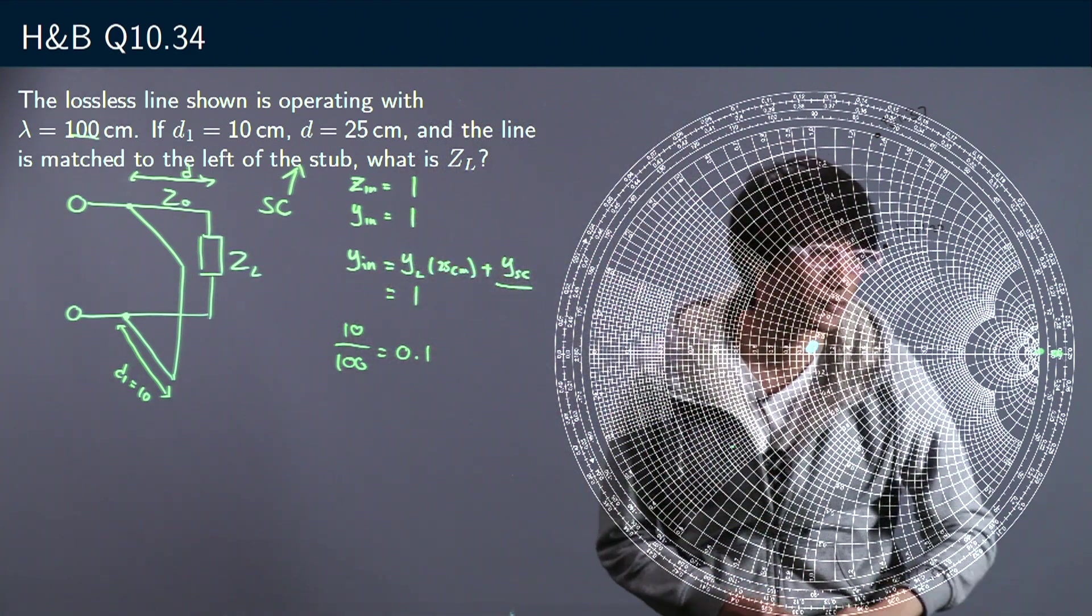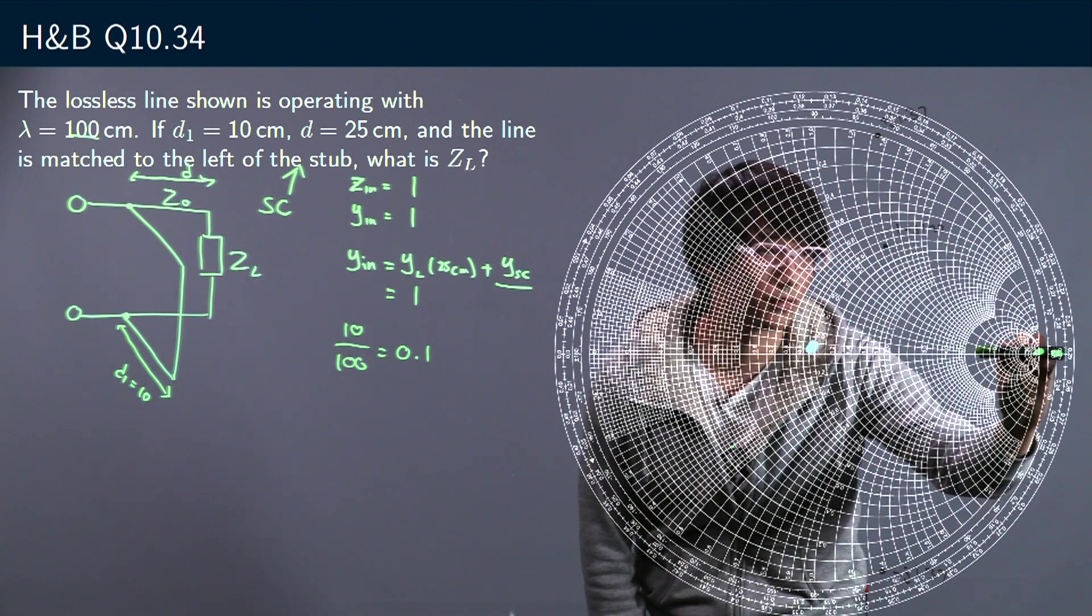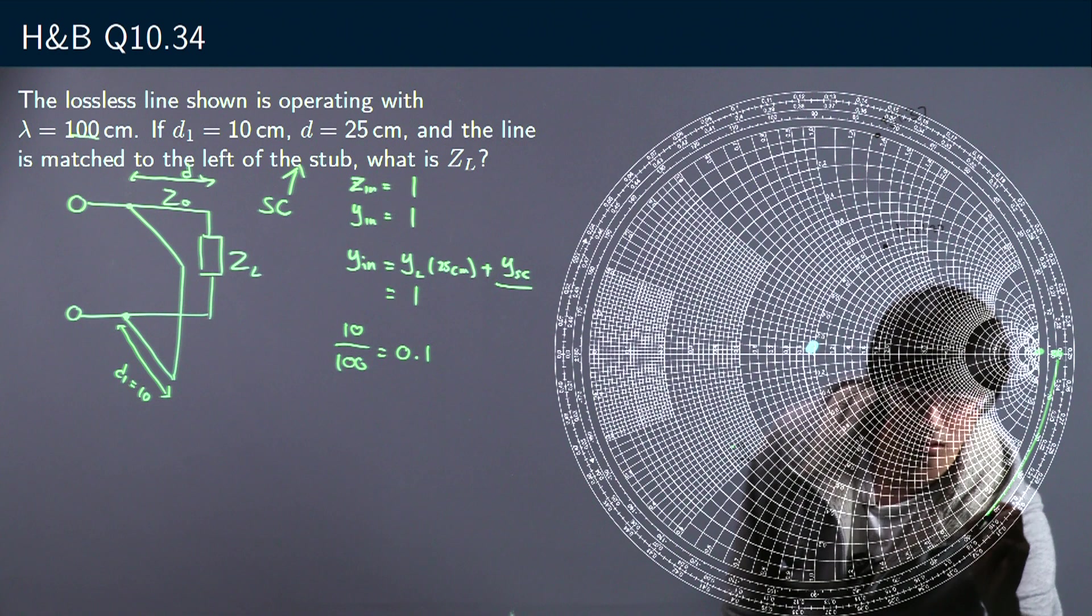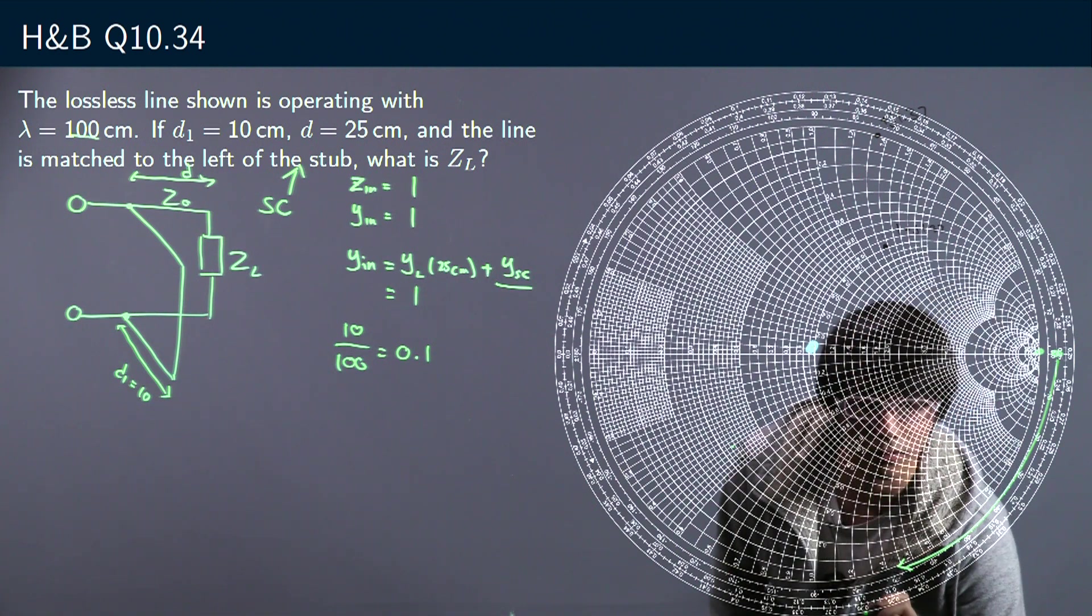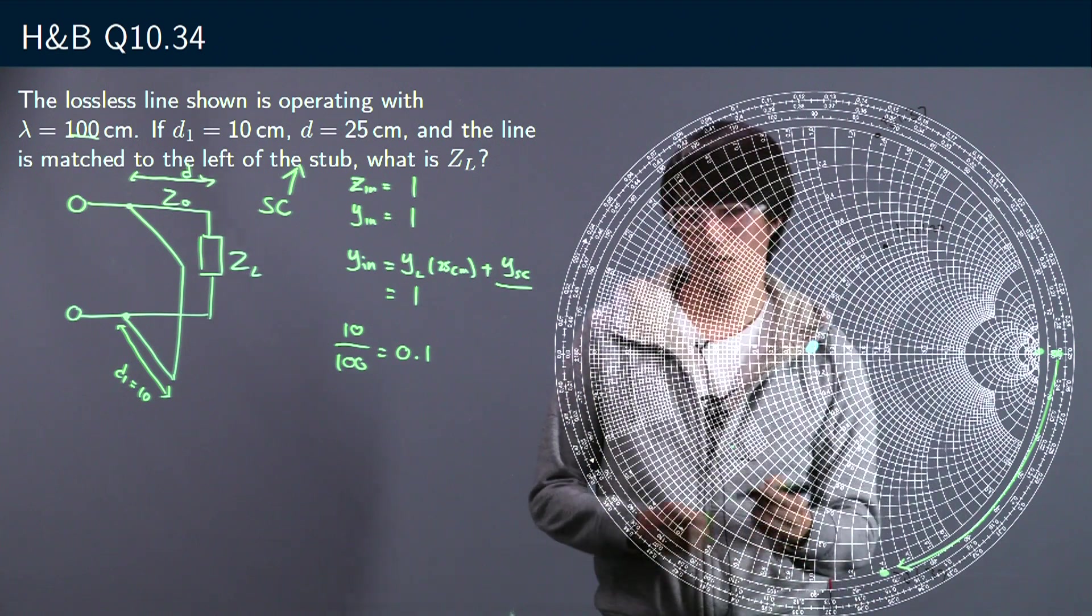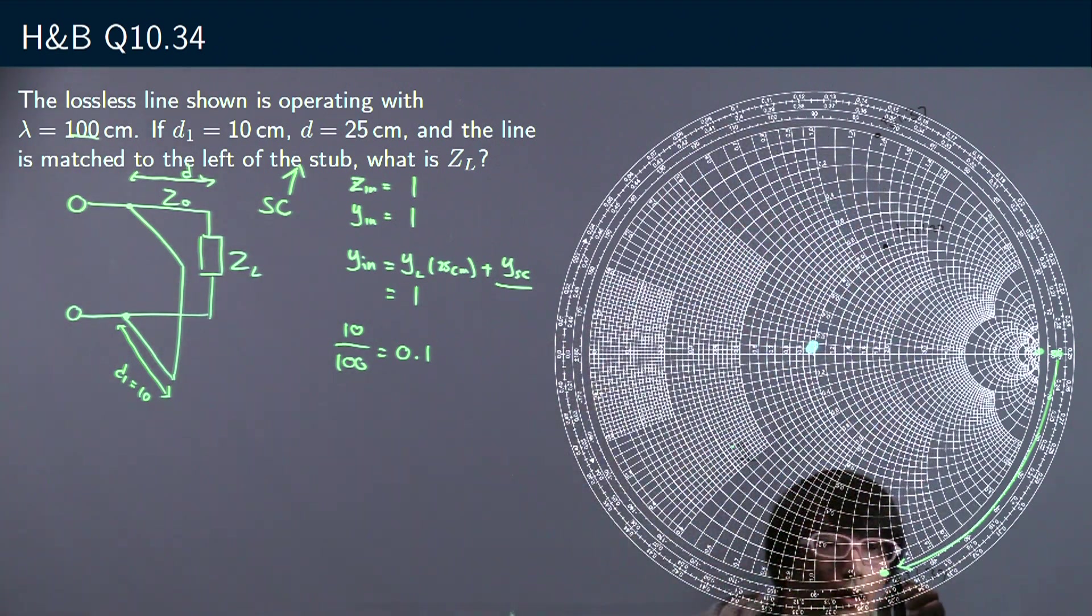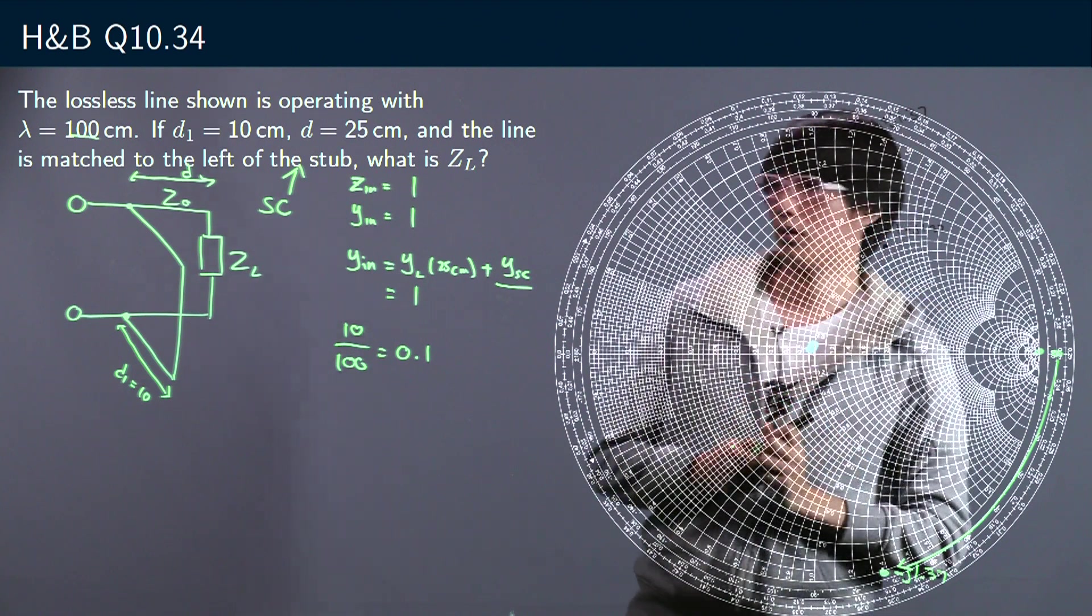So we're gonna move a tenth of a lambda, going from this direction down to somewhere around there. That is the input admittance contribution of our short circuit stub. Reading that out, that is negative j 1.37.